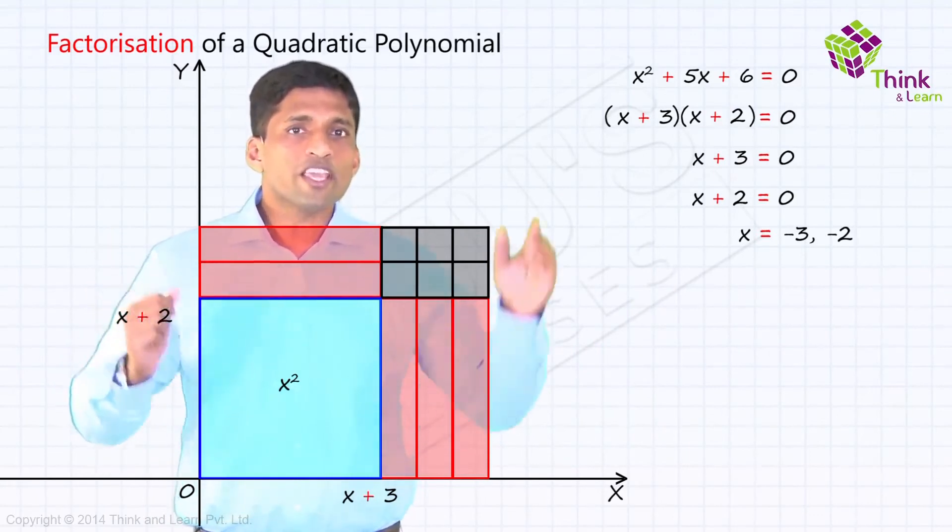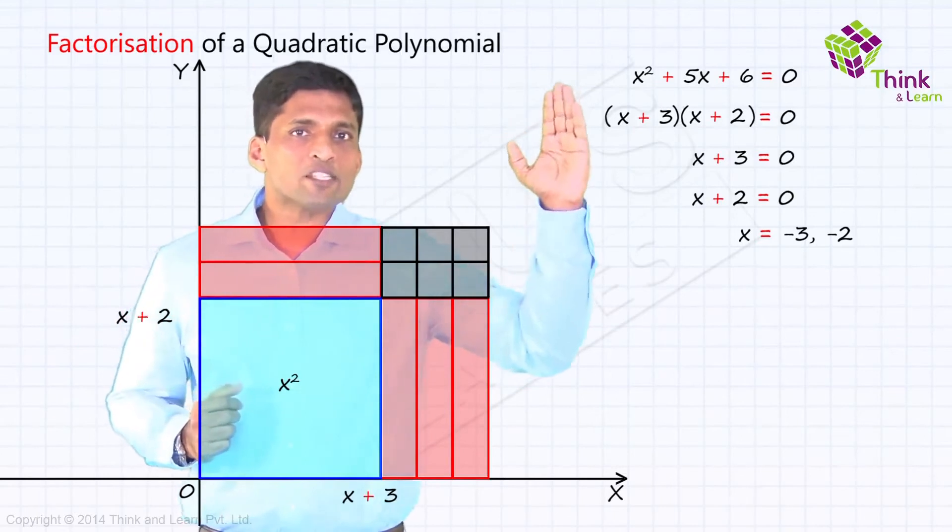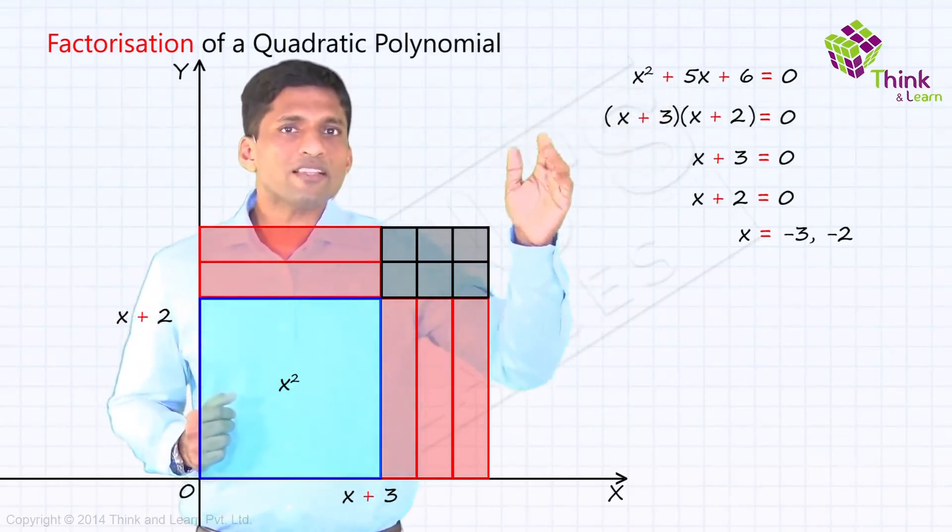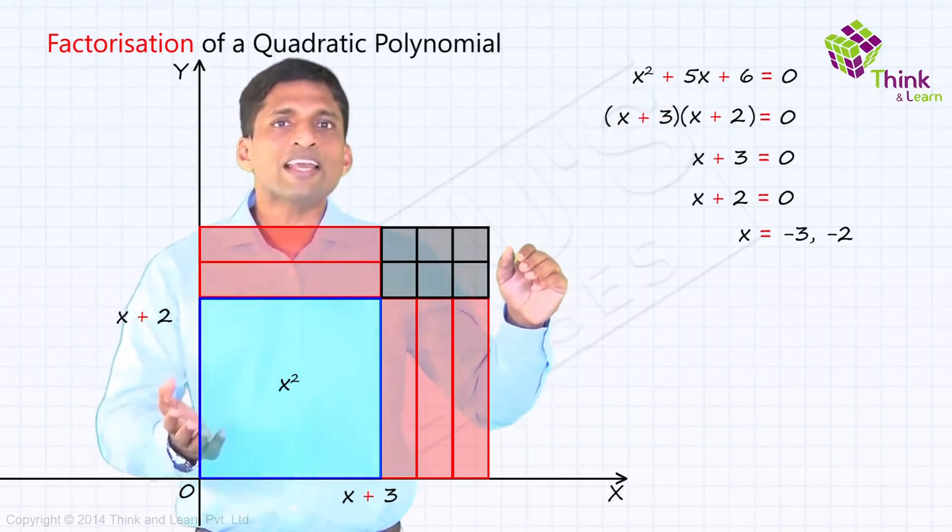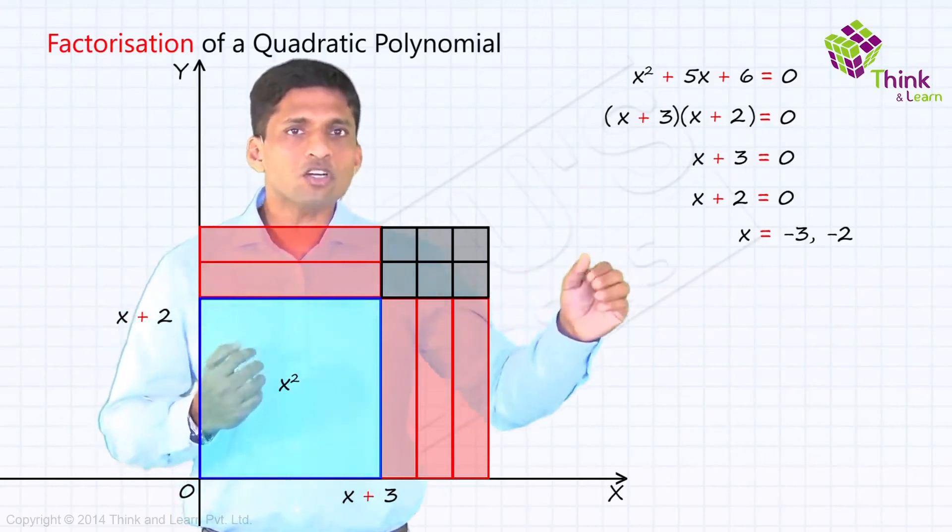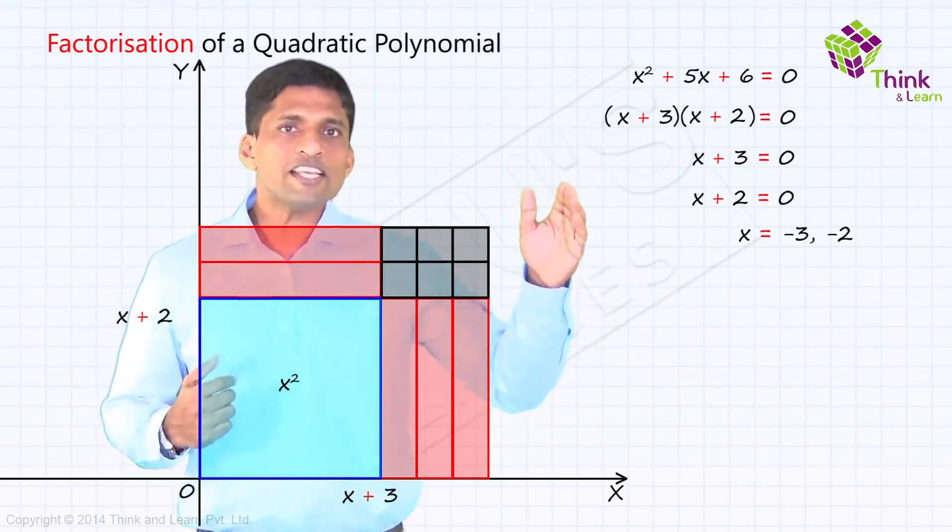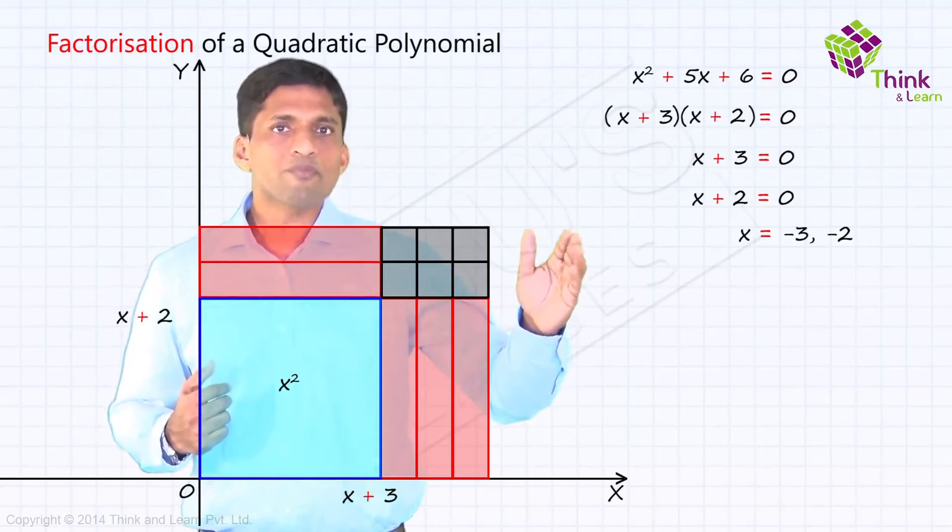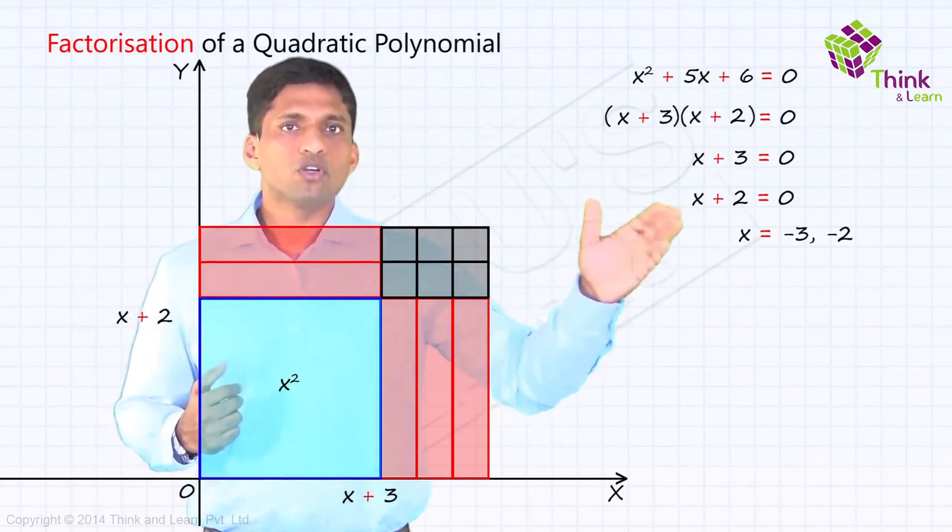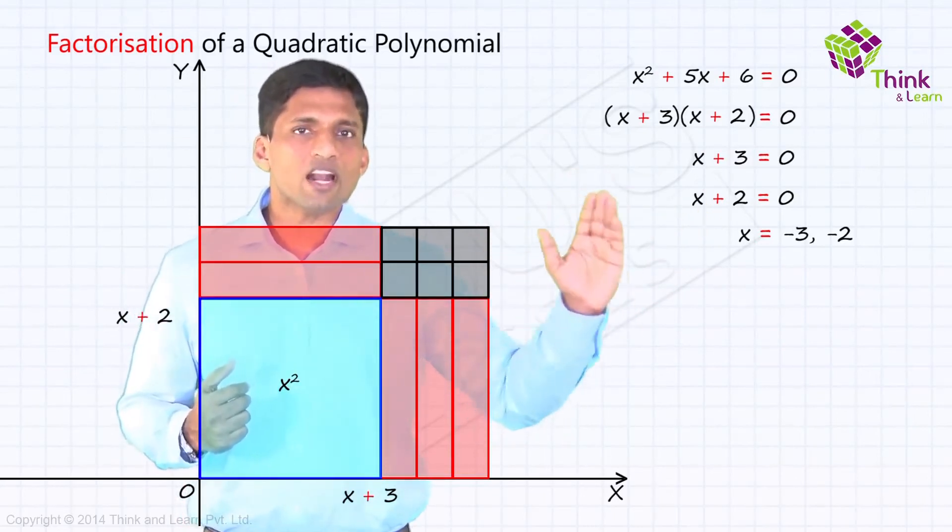So when will it become 0? Here, x plus 3 is the length and x plus 2 is the breadth. You can either make the length 0 so that the rectangle area will become 0 or the breadth 0 so that again it will become 0. That is when x equal to minus 3 or x equal to minus 2. So the roots are x equal to minus 3 and minus 2.